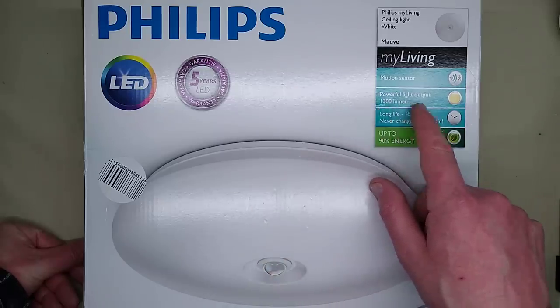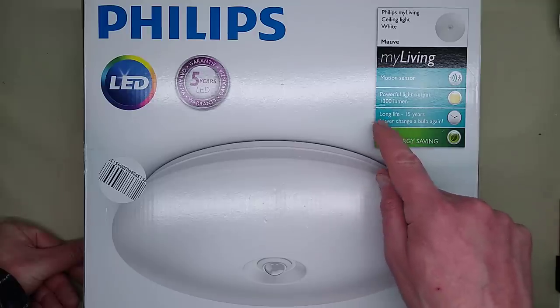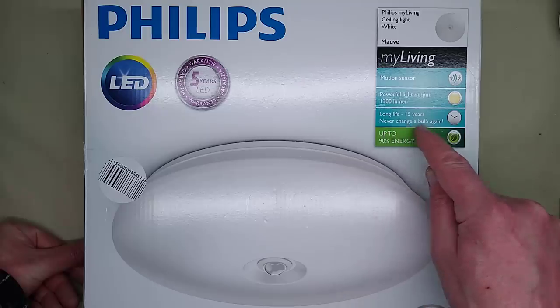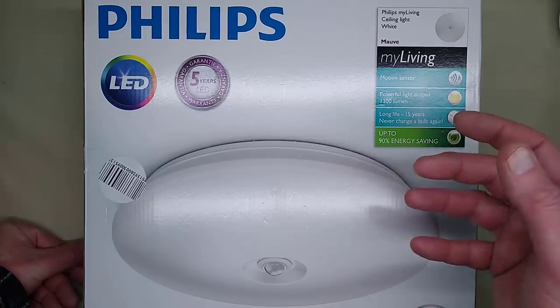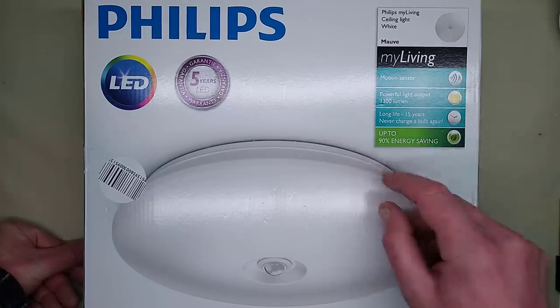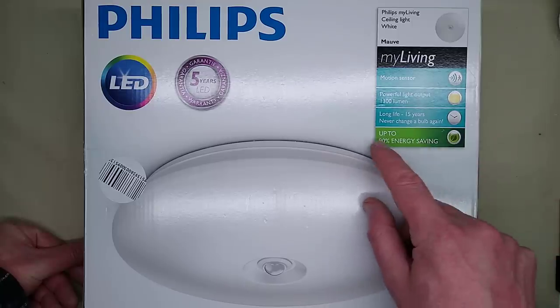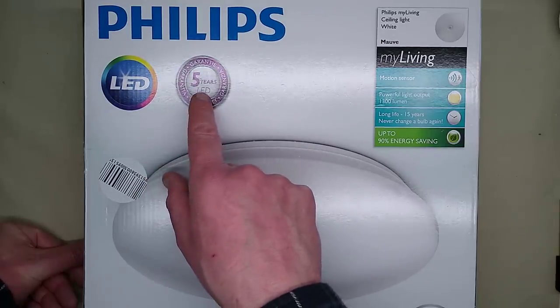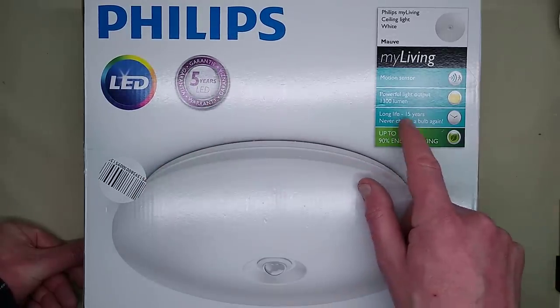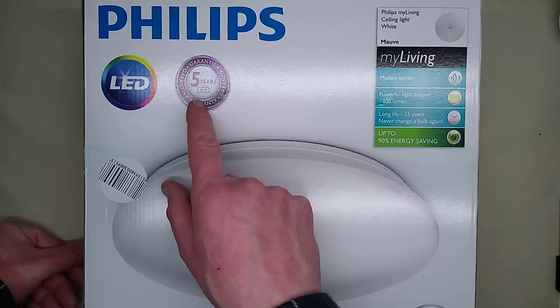It says motion sensor, purple light output, 1300 lumen, long life 15 years, never change a bulb again. Is it wrong to be cynical about that? Up to 90% energy saving - obviously starts at zero. Five years LED guarantee. So it's saying long life 15 years but five years warranty on the LED, doesn't say anything about a warranty on the power supply.